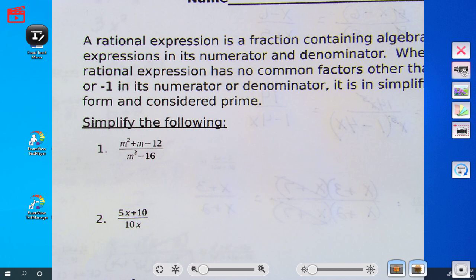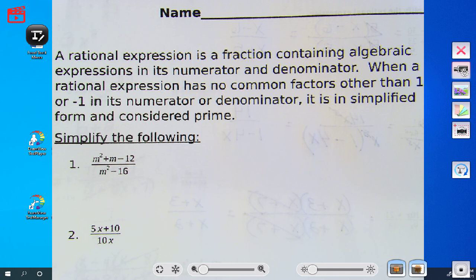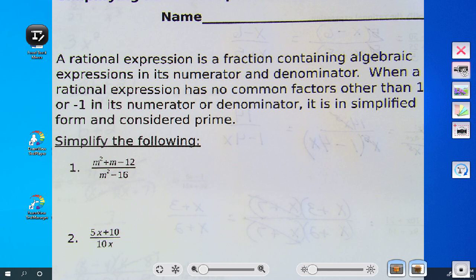Okay. A rational expression, we're on page seven. Is a fraction contained in algebraic expressions in its numerator and denominator. When a rational expression has no common factors other than one or negative one in its numerator and denominator, its simplified form is considered prime. Now, I didn't do this period one, two, but I want to do it with you. I'm going to do the restrictions with you because we found out when you do your homework or a Khan, they ask you for the restrictions. They exclude the values. So I'm going to actually throw them in. So we're going to do them at the same time.